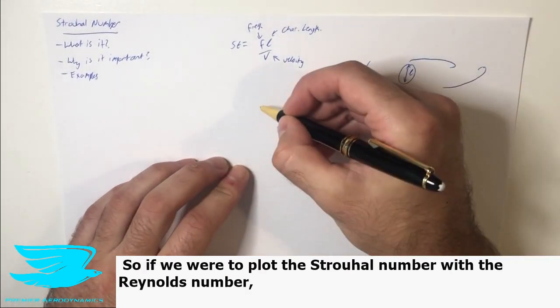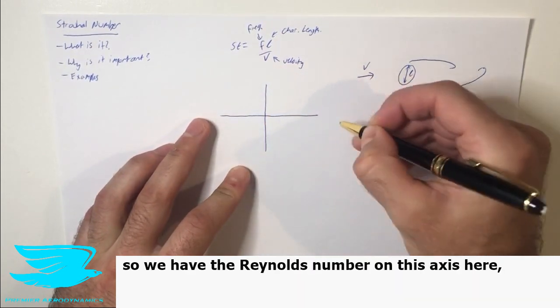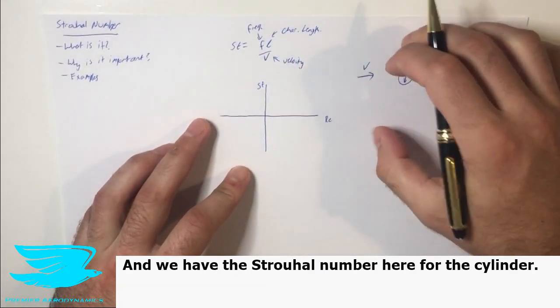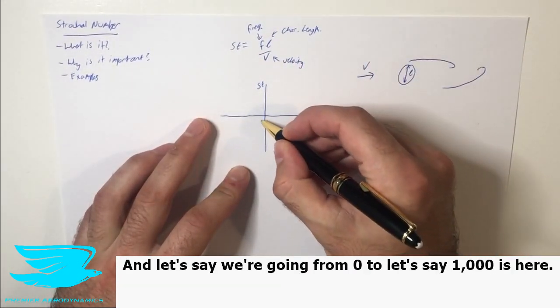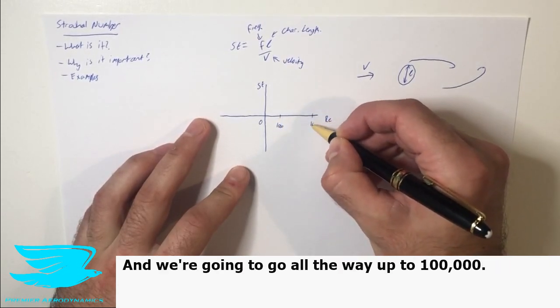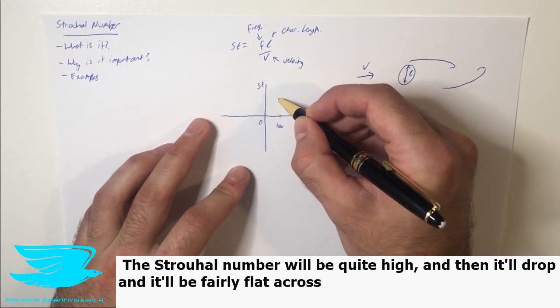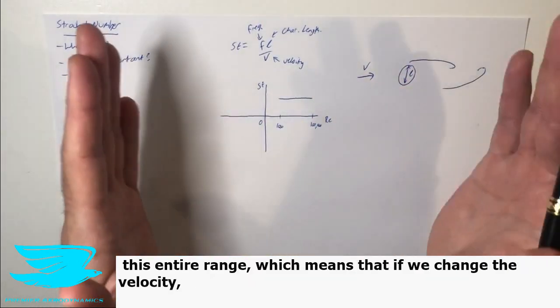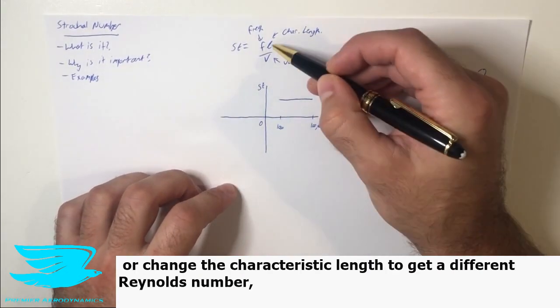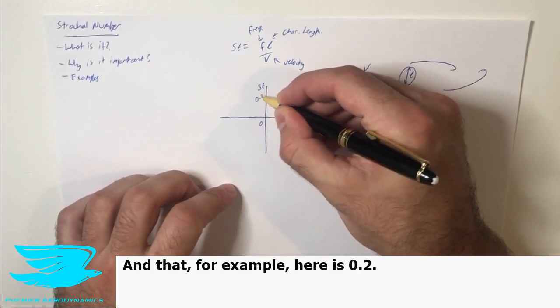So if we were to plot the Strouhal number with the Reynolds number, so we have the Reynolds number on this axis here, and if you don't know what the Reynolds number is, check out this video here, and we have the Strouhal number here, for the cylinder, and let's say we're going from zero to, let's say, 1,000 is here, and we're going to go all the way up to 100,000, and this can be, let's say, a log scale. The Strouhal number will be quite high, and then it'll drop, and it'll be fairly flat across this entire range, which means that if we change the velocity or we change the characteristic length to get a different Reynolds number, the Strouhal number will still hover at a certain value, and that, for example, here is 0.2.